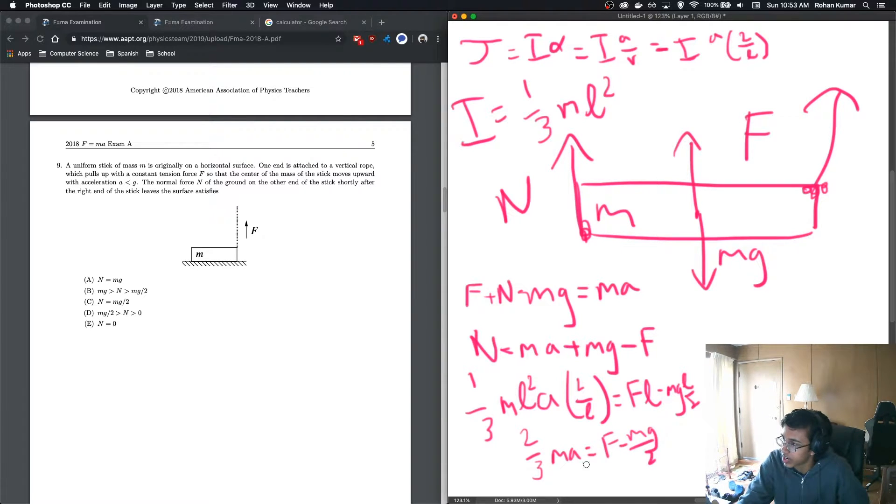If we cancel everything out and simplify, we get two thirds MA is equal to F minus Mg over 2. And now we just plug this back into our previous equation, I think, and that should give us an answer. So we get that N is equal to, we want to substitute that F because we are given that A is less than G and we know what G is. And all our answers are in terms of G. So there's no point in having an F. So let's just get rid of that. And we get MA plus Mg minus two thirds MA minus Mg over 2.